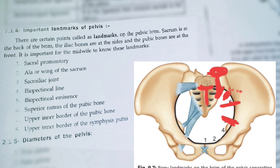Next is the superior ramus of the pubic bone. If you know the parts of the bones — the parts of the pelvis — you will get to know these landmarks easily. This is the superior ramus of the pubic bone. Next is the inner corner or inner border of the pubic bone.